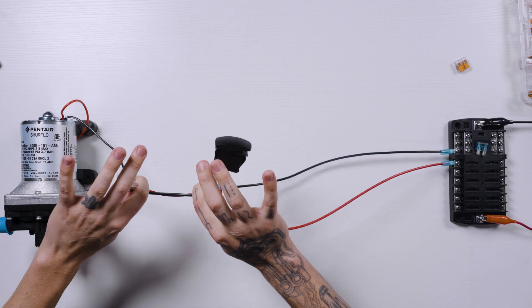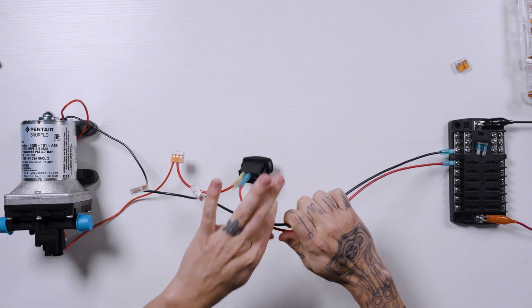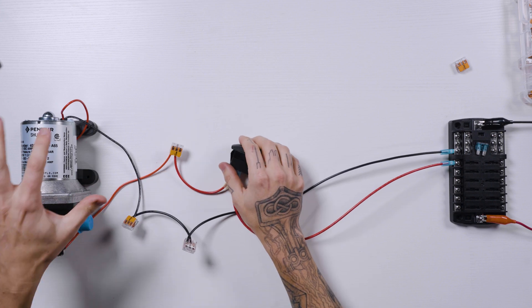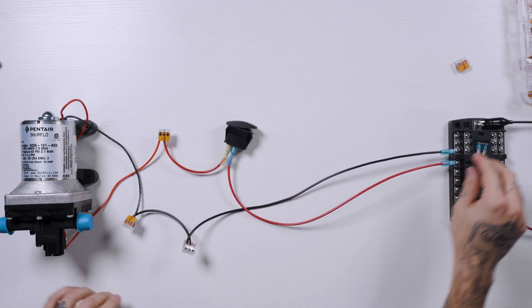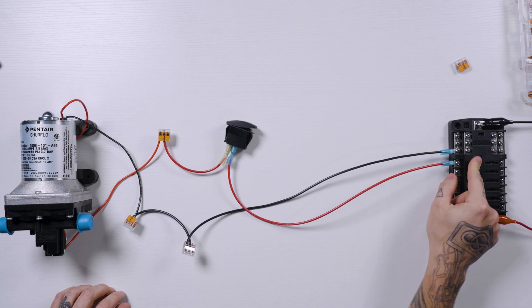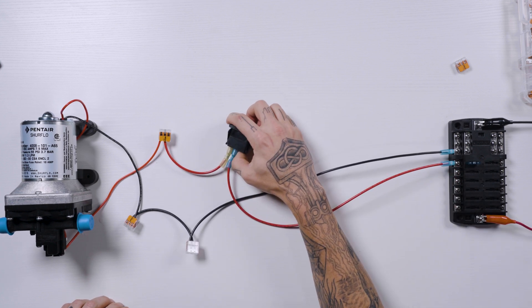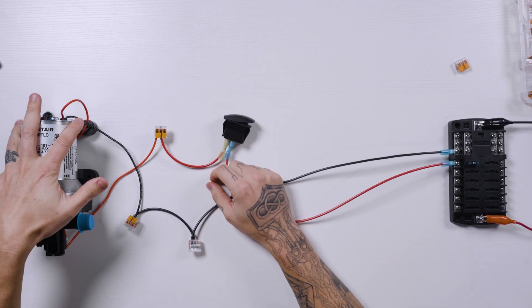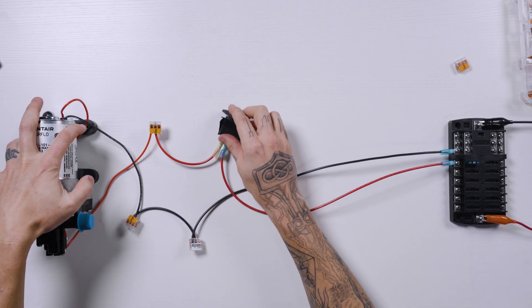So remember, these wires here can be as long as needed. These wires here can also be as long as needed to get the switch and the pump where you need it to be. Lastly, we can just put this fuse in the fuse block so we can have power, and then it got all over the desk. Great. But it works. So this would be flowing water anytime the switch is on.